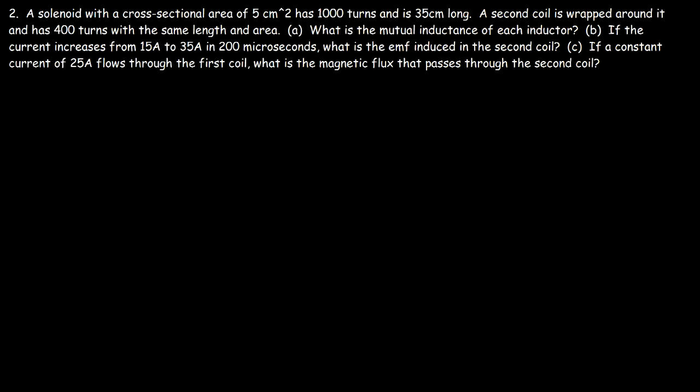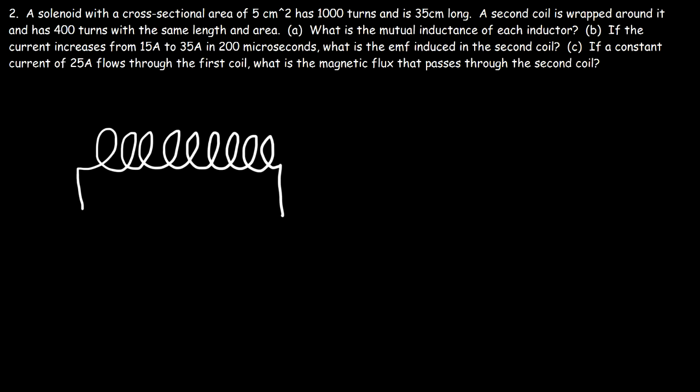A solenoid with a cross-sectional area of five square centimeters has 1,000 turns and is 35 centimeters long. A second coil is wrapped around it and has 400 turns with the same length and area. What is the mutual inductance of each inductor? Let's say there's a second coil inside the first coil — coil one and coil two. The magnetic field of a solenoid is strongest at the center, so almost all of the magnetic field generated by coil one passes through the center of coil two.